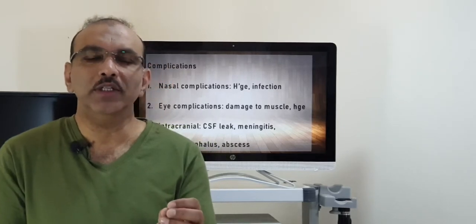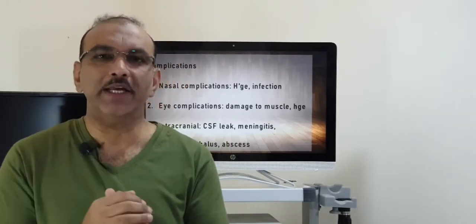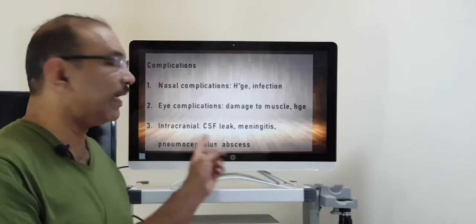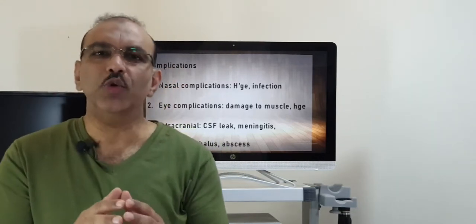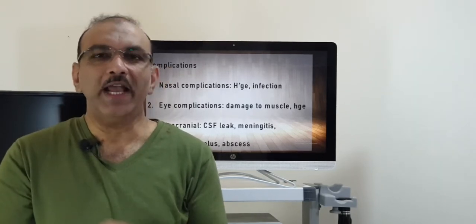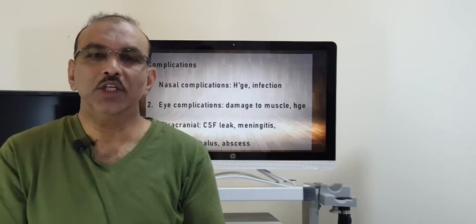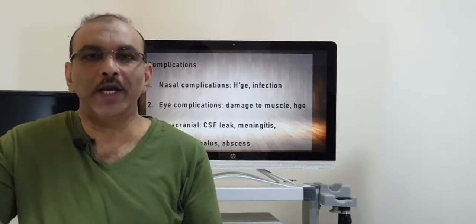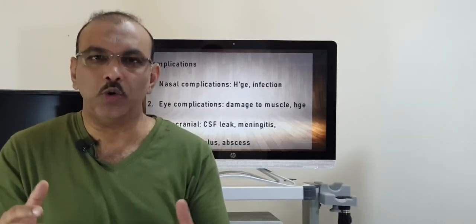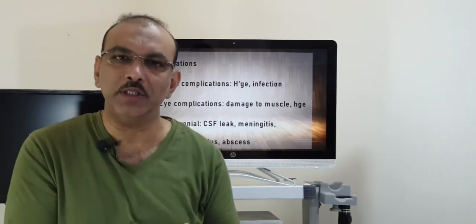Let me tell you about the complications of surgery, divided into 3 headings: nasal, orbital, and intracranial complications. For nasal complications, the main one is bleeding — it can be intraoperative (which we manage), postoperative in the ward, or at home. If bleeding occurs in the ward or at home, you must meet the doctor. If we cannot control it and it is still profuse, you will be taken back to the operation theatre to control the bleed.